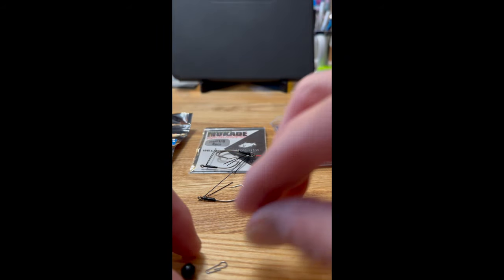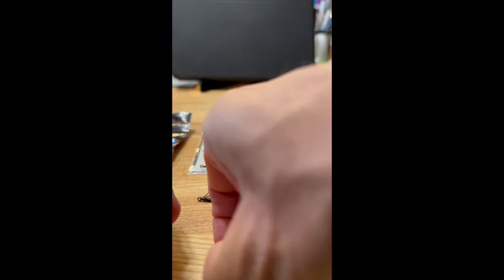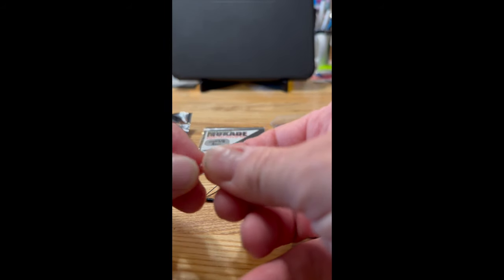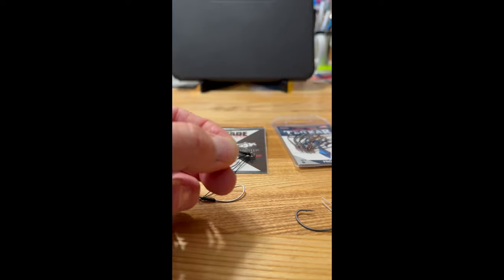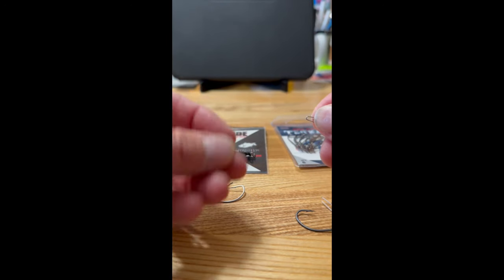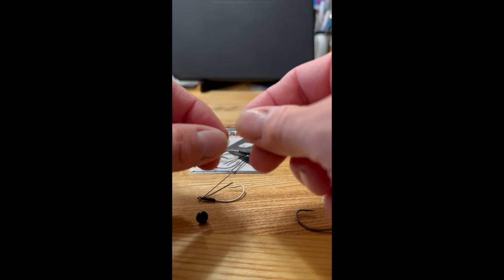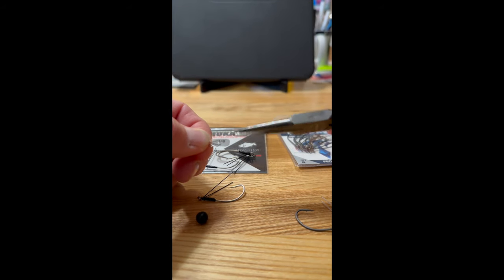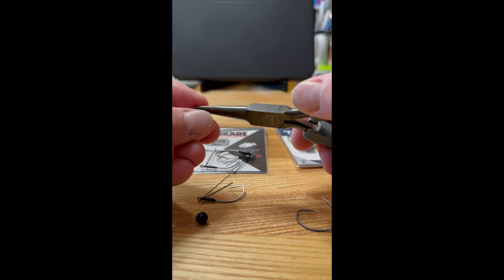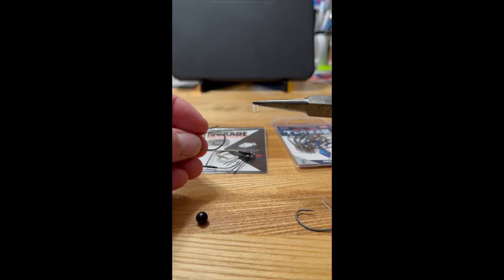So real quick, you take the Cheb Rig weight, and what it is is it has this little wire inserted in it, and it goes in a slot in the Cheb Rig. Sorry about the focus. So you take that little wire out, and it's easiest to do this with a pair of needle nose pliers, I've found.